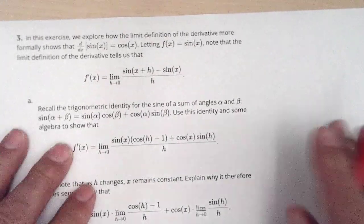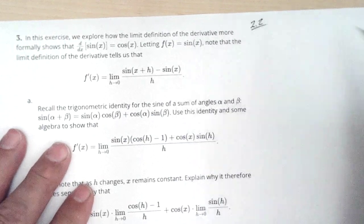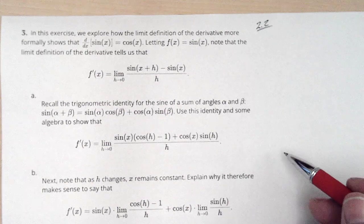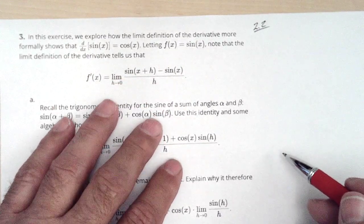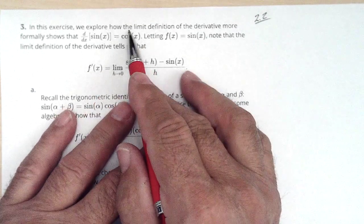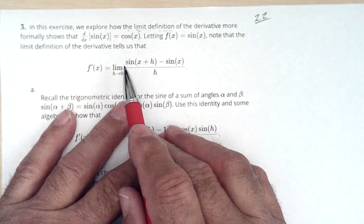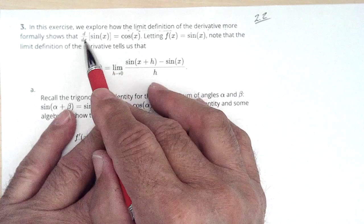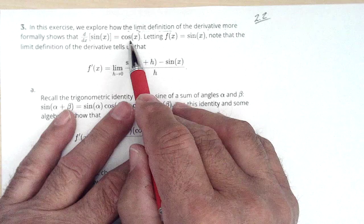We're going to do number three out of section 2.2. A lot of people had trouble with this problem. I've done it in class a couple of times, but I thought I'd do it again so that you have a video on it so you can look at it more closely. It says, use the limit definition of the derivative to find more formally that the derivative of sine of x is cosine x.